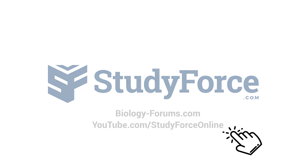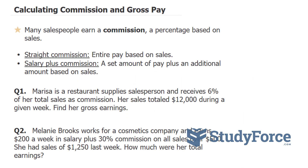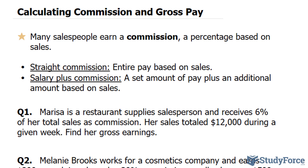In this tutorial, I'll show you how to calculate commission and gross pay. Many salespeople earn a commission, which is a percentage based on sales. There are two types. Straight commission means your entire pay is based on the amount that you sell. There's also salary plus commission, where you earn a set amount of pay plus an additional amount based on sales.